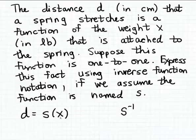Since the weight x is the input in the original function and the matching output is the distance d that the spring stretches, this means that in the inverse function the input will be the distance d that the spring stretches and the matching output will be the weight x attached to the spring.